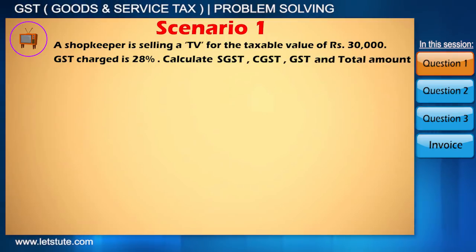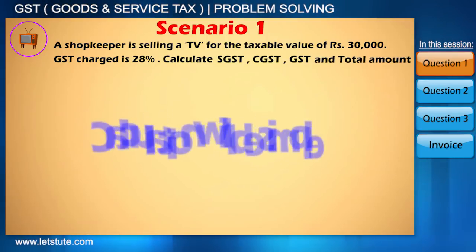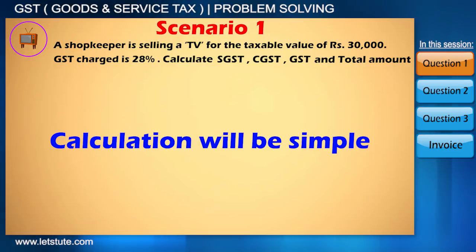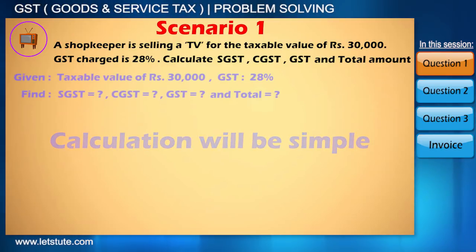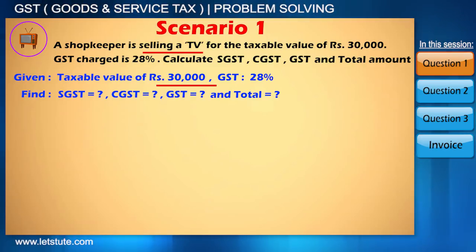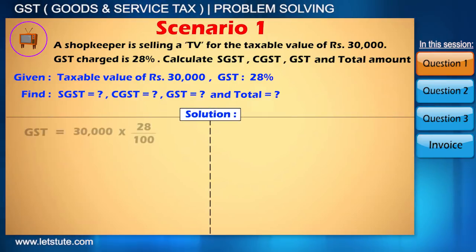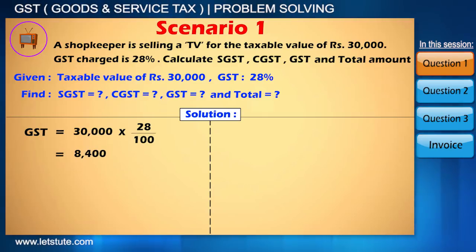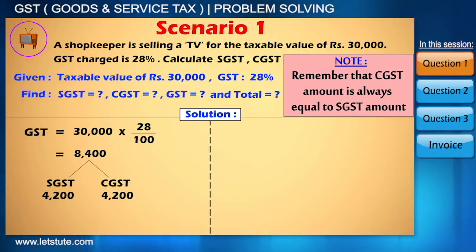Now things are a little mathematical — there will be some calculation related to percentage. First of all, taxable value is nothing but the selling price, or you can say the purchase price of the product. We can directly calculate 28% of 30,000, which is 8,400 as GST, and this amount can be equally allocated for SGST and CGST as 4,200 each.